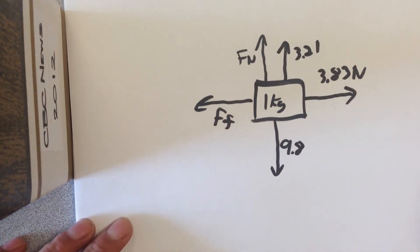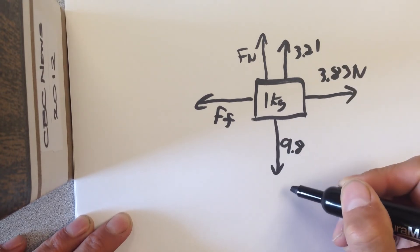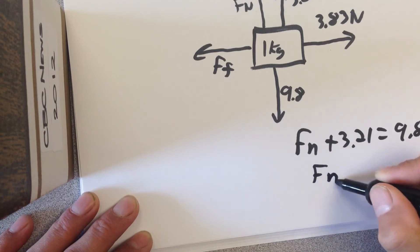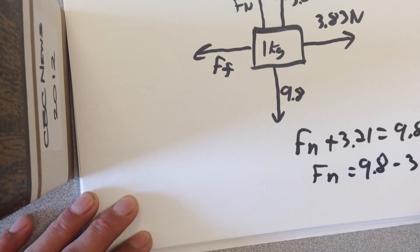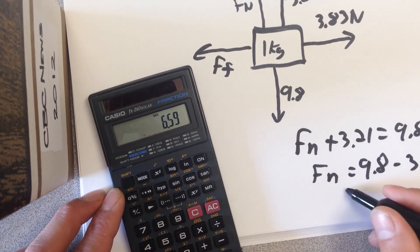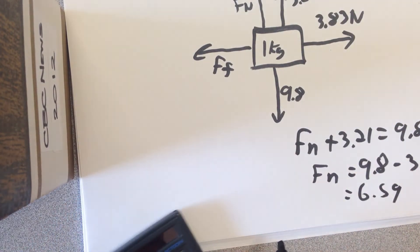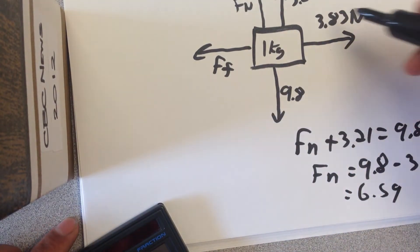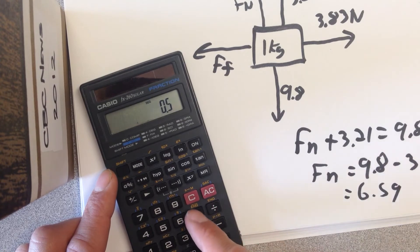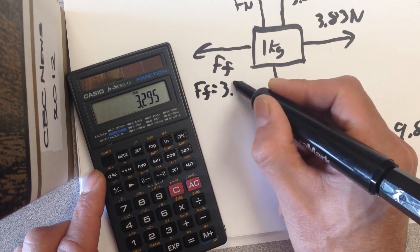As the block sits, the normal force plus 3.21 balances gravity of 9.8 Newtons. So Fn + 3.21 = 9.8, which makes the normal force 9.8 minus 3.21. Our normal force is therefore 6.59 Newtons. The force of friction equals mu times the normal force: 0.5 times 6.59, giving a force of friction of 3.3 Newtons.